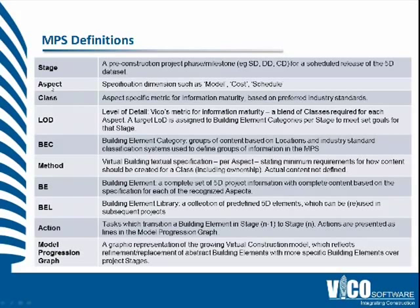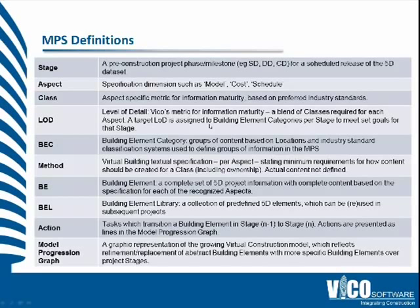Then we have classes. Each one of these aspects has a development in itself of information maturity. As cost develops, it will go through a number of classes. There are industry standard classes — for scheduling, master scheduling would be the first class and weekly work planning the last. The combination of those classes for each aspect defines a level of detail, and this is our metric for information maturity. It blends all of the classes together and provides us a target for building element categories per stage as we go through design.